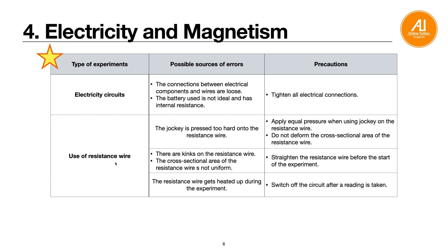When using a resistance wire, some students press the jockey too hard onto the wire. You should apply equal pressure with the jockey so you do not deform the cross-sectional area of the resistance wire, because the formula R = ρL/A shows that the area affects resistance. Also check that the resistance wire lies flat and parallel on the meter rule with no bends or bumps, and that its cross-sectional area is uniform. If not, ask the lab technician to replace it or straighten the wire before the experiment.